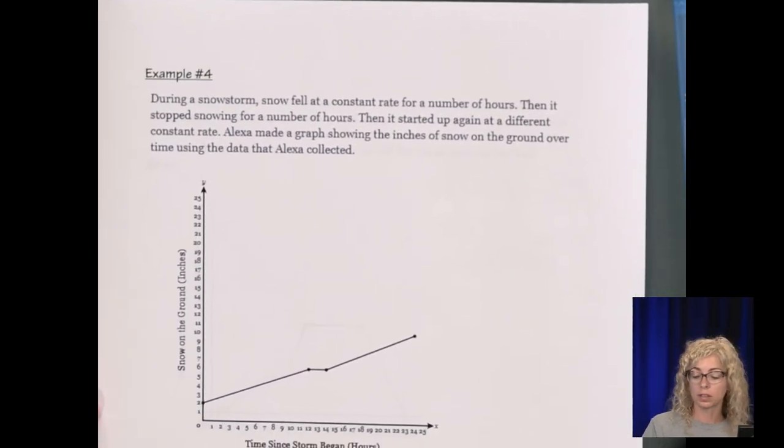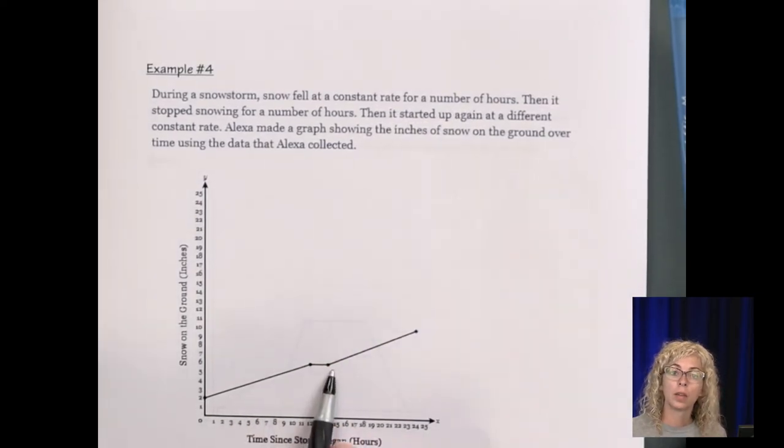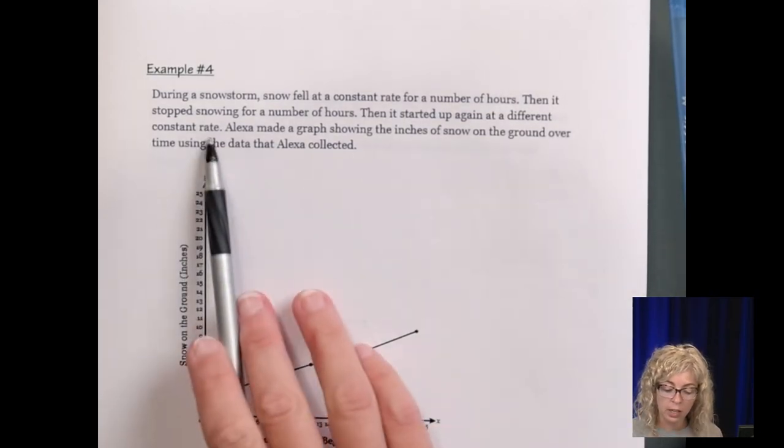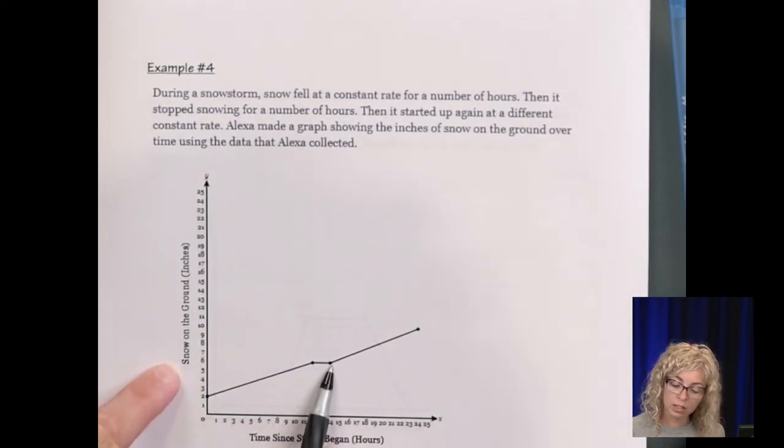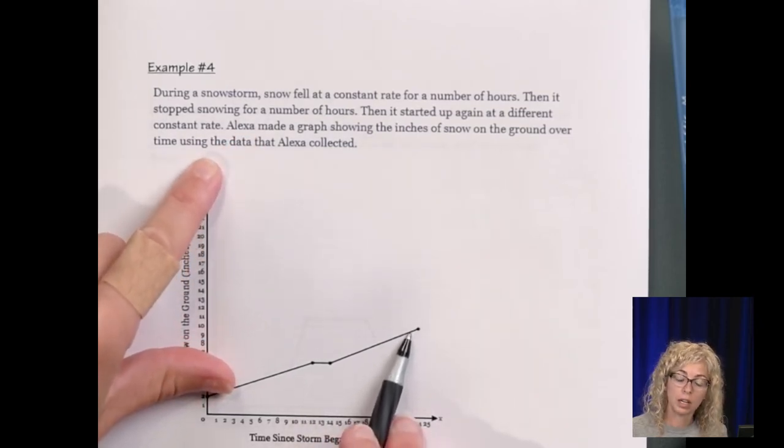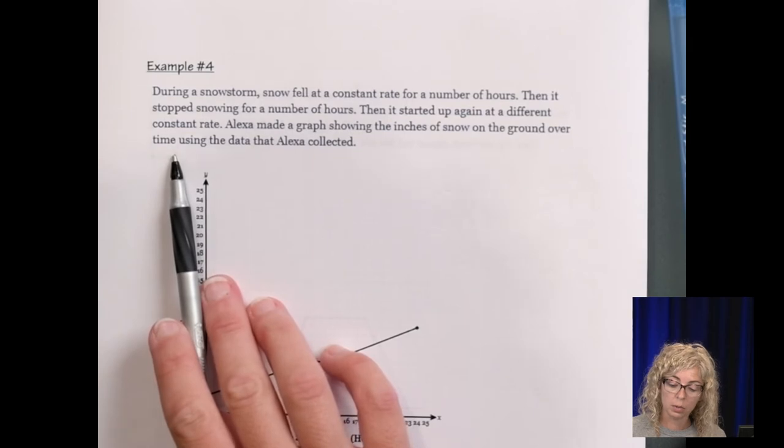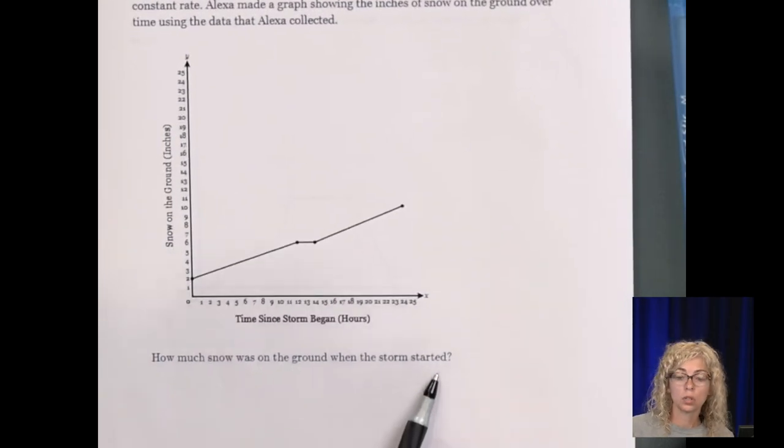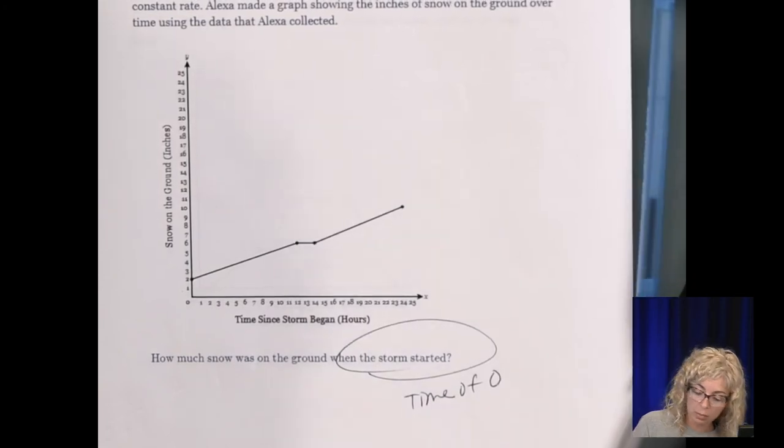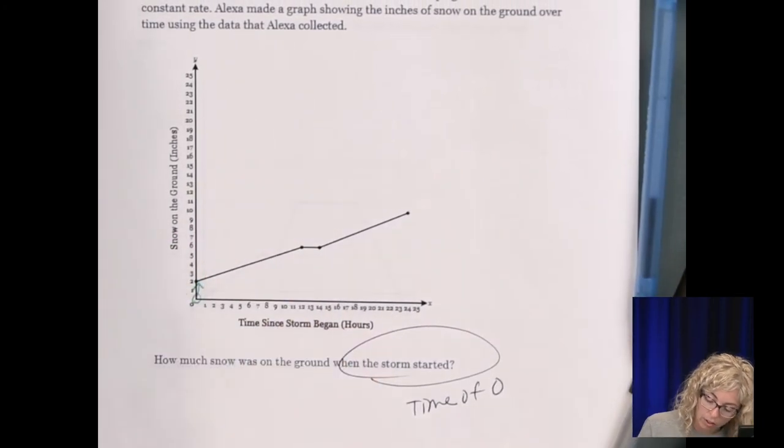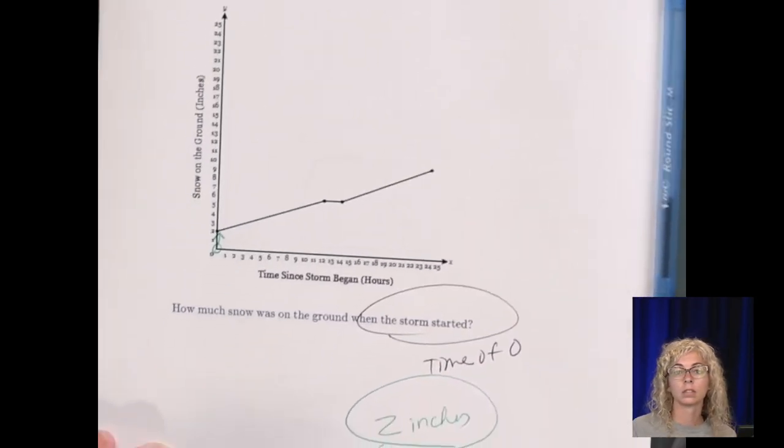Alright, number 4. During a snowstorm, snow fell at a constant rate for a number of hours. So that's why we see linear function. And then linear and line. All three lines are piecewise. Then it stopped snowing for a number of hours. So it snowed, right? We have more snow on the ground. It stopped. And then it started up again at a different rate. Alexa made a graph showing the inches of snow on the ground over time using the data. How much snow on the ground when the storm started?